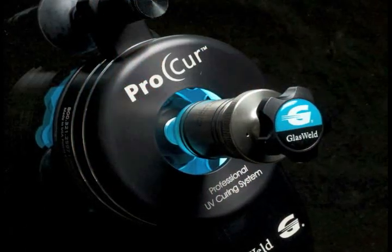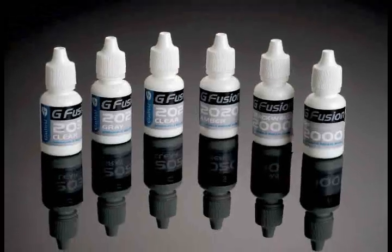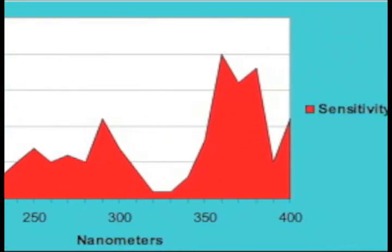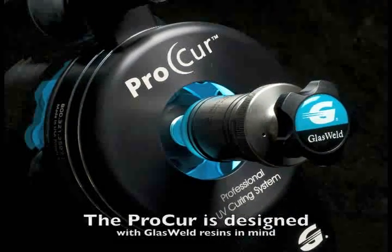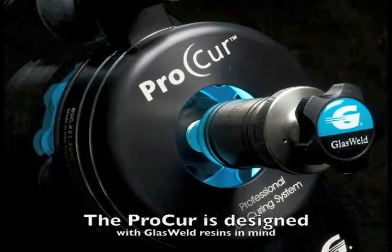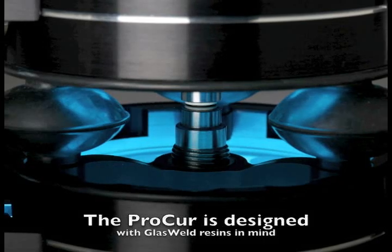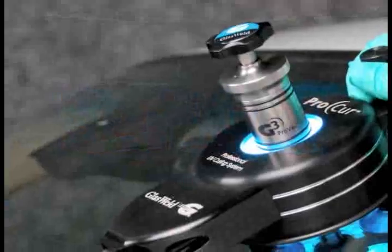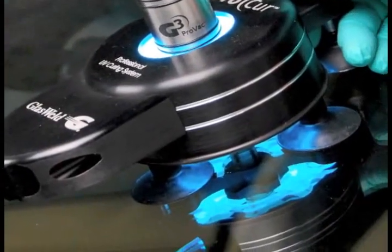The Glass Weld Pro-Cure curing lamp is designed to cure Glass Weld resins. The resin requires a specific ultraviolet wavelength, and the Pro-Cure is designed to put out this exact ultraviolet wavelength. Every Glass Weld curing solution is fully powered and designed to deliver a consistent ultraviolet light that does not fluctuate and does not change.